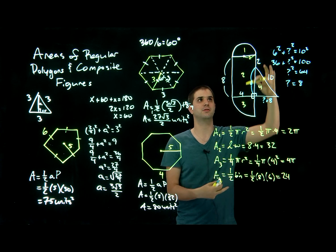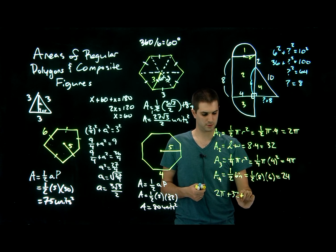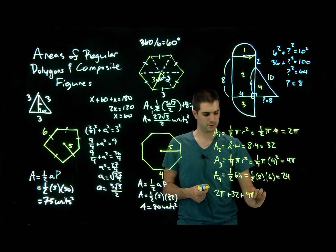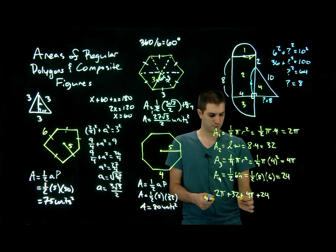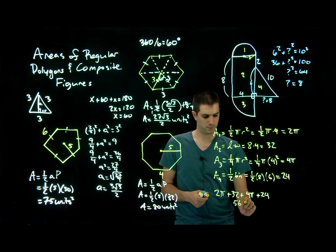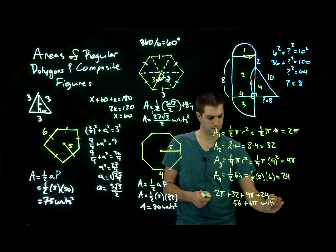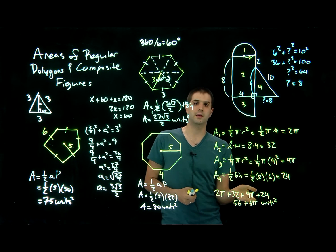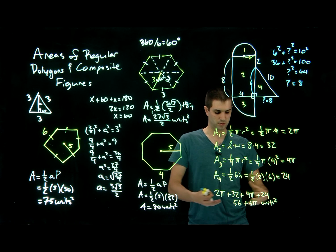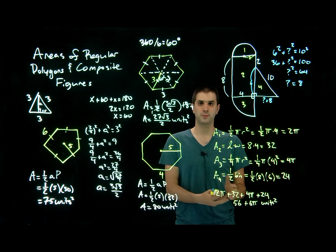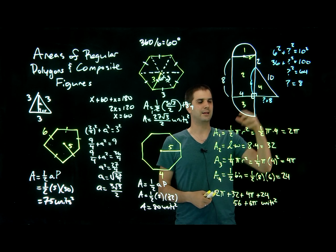Now we add all the areas together for the composite total: 2π plus 32 plus 4π plus 24. The numeric parts: 32 plus 24 equals 56. The pi terms: 2π plus 4π equals 6π. So the total composite area is 56 plus 6π units squared. You can use a calculator — 6π is around 20 — but 56 plus 6π is an acceptable answer. Hopefully this helped you learn about finding areas of regular polygons and composite figures.